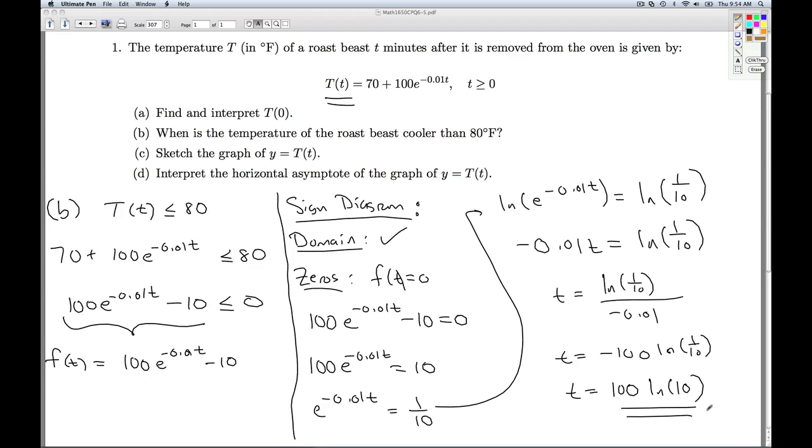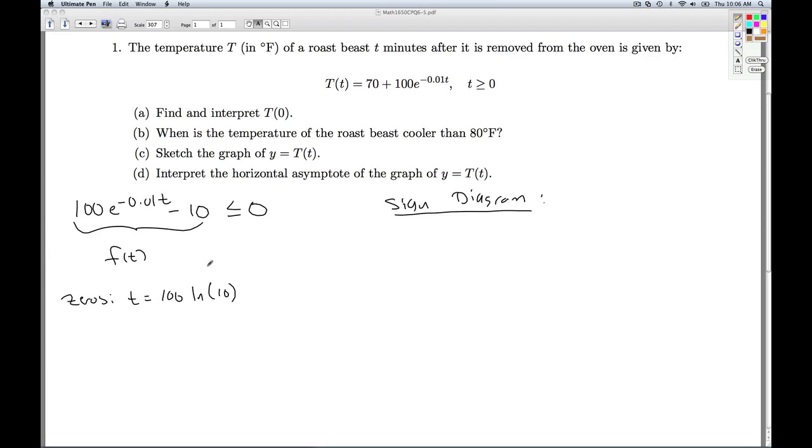So now it's time to actually construct the sign diagram. Okay, so here was the inequality. I'm calling that thing f of t. The only zero we found was 100 natural log of 10. So we go off to make our sign diagram.